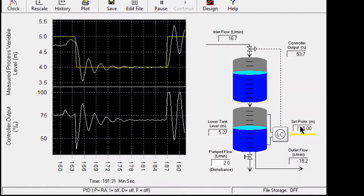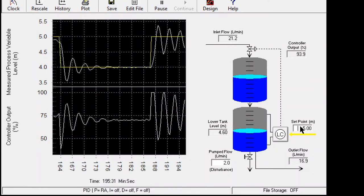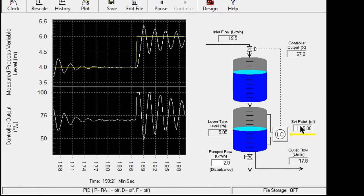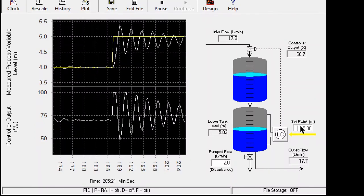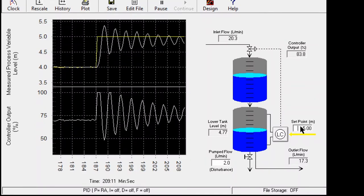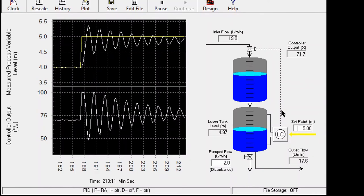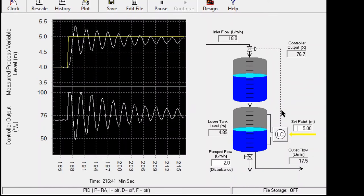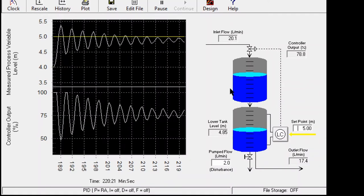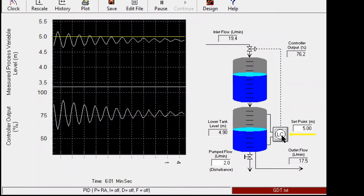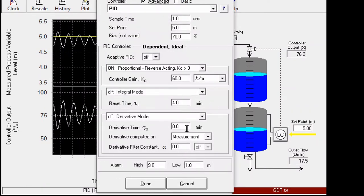Now we see even at a very high value like 60, the oscillation is dying down, meaning that we still have not reached the ultimate gain. So we have tested 60. Now let's see what happens when the value is 65.